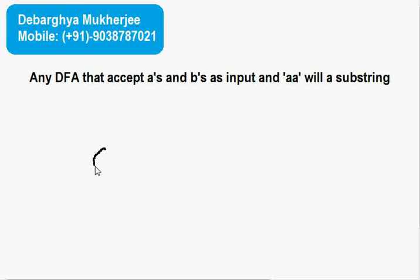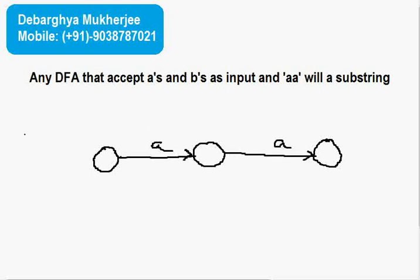I will make one state, then make another state, then make another state. Now as we must have aa, so we will do a from there, another a. This must be your starting state and this must be your ending state. So if you have aa then you will simply start from here, you get a then you get another a and you will be here in the final state.